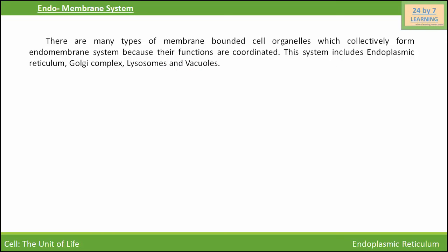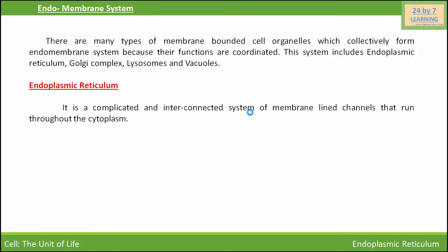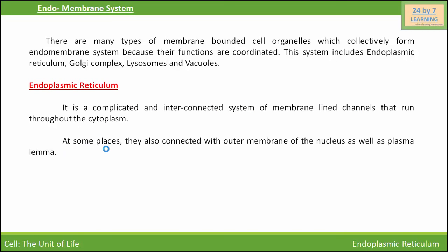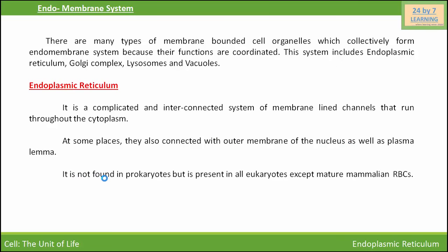Now we are going to start with endoplasmic reticulum. If you remember the structure of eukaryotic cell, in eukaryotic cells there is an interconnected channel-like structure which is present near the nucleus, and its membrane is also connected with the nuclear membrane. That interconnected channel-like structure is the endoplasmic reticulum — a complicated and interconnected system of membrane-lined channels that run throughout the cytoplasm. At some places they are connected with the outer membrane of the nucleus, and at other places they may be connected with the plasma membrane. Endoplasmic reticulum is not found in prokaryotes, but it is present in all eukaryotes except mature mammalian RBCs.